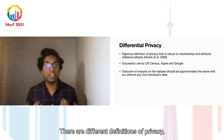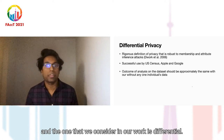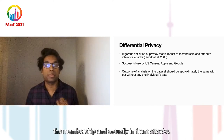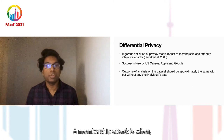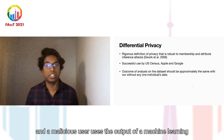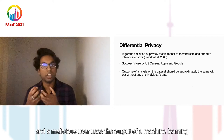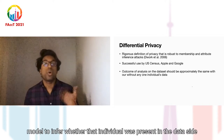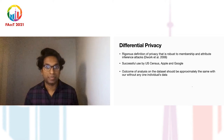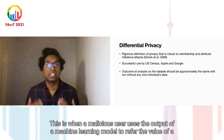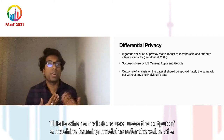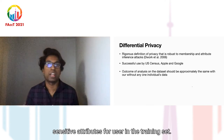There are different definitions of privacy, and the one we consider in our work is differential privacy. Differential privacy is a rigorous definition of privacy that is robust to membership and attribute inference attacks. A membership attack is when a malicious user uses the output of a machine learning model to infer whether an individual was present in the dataset. Similarly, for attribute inference attacks, this is when a malicious user uses the output of a machine learning model to infer the value of a sensitive attribute for a user in the training set.